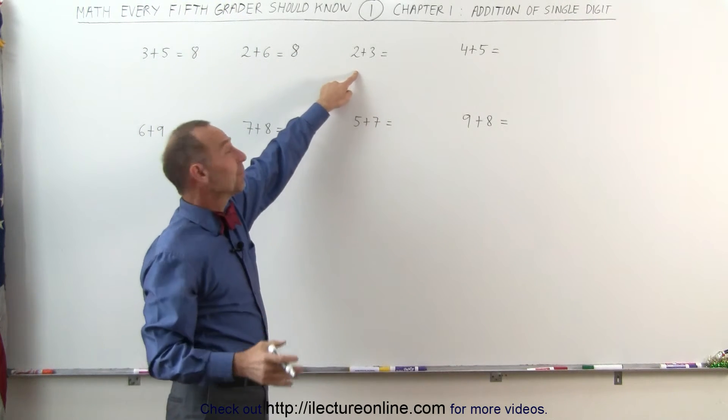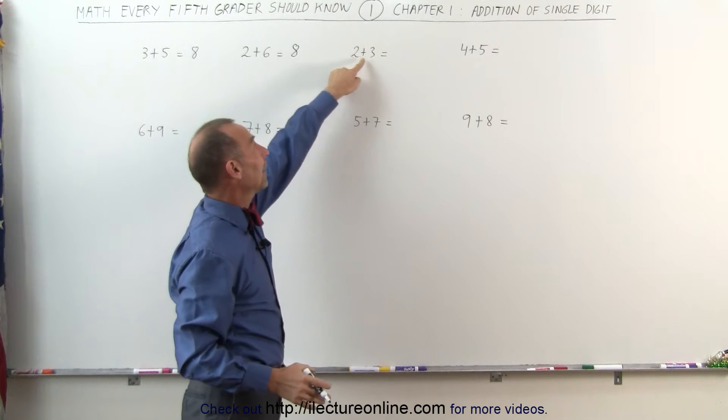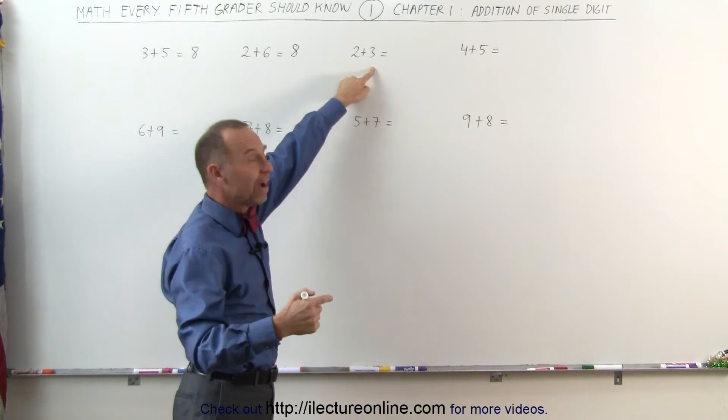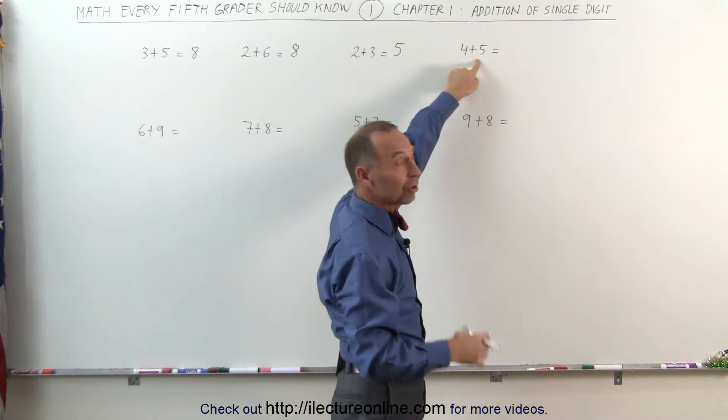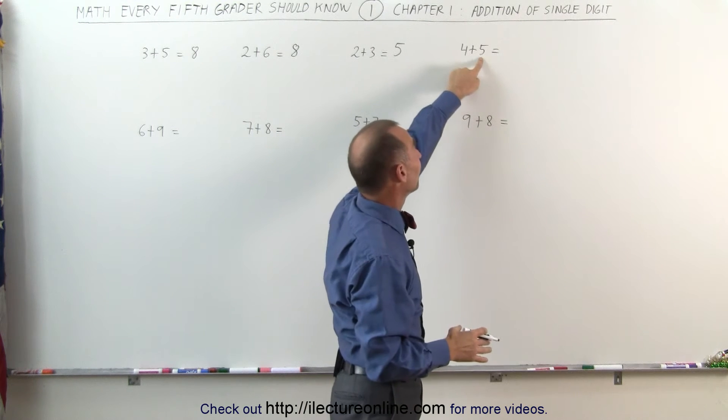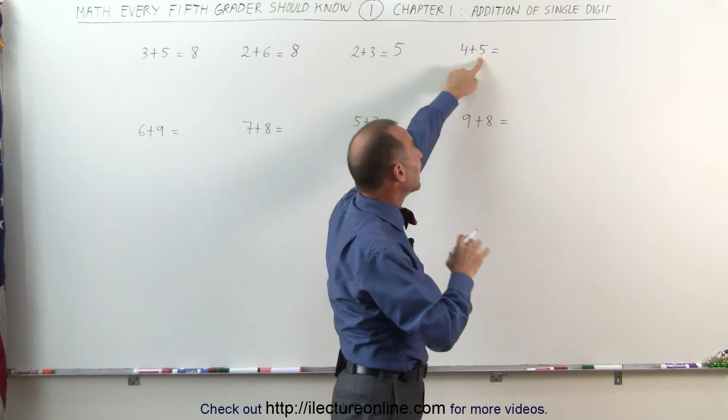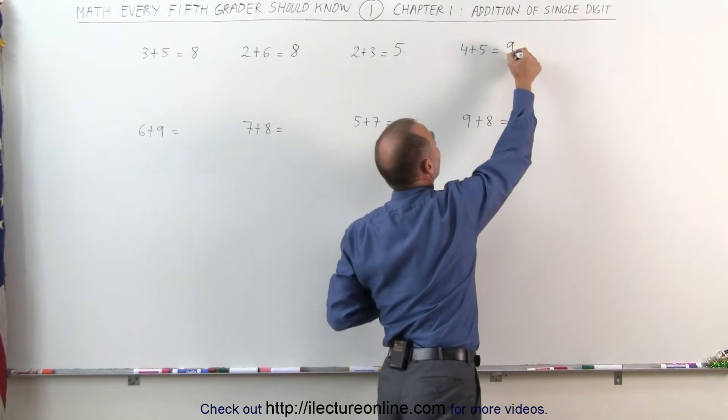2 plus 3, same thing, we take the larger number and add 2 more to it, 3, 4, 5, so 3 plus 2 is 5. And here we have 4 plus 5, start with the larger number, add 4 more to it, 5 means from 5 we get 6, 7, 8, and 9. 4 plus 5 is 9.